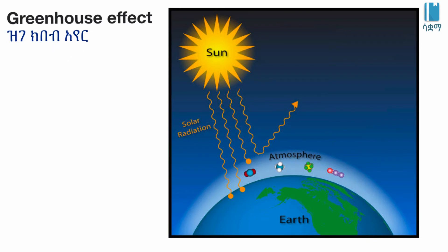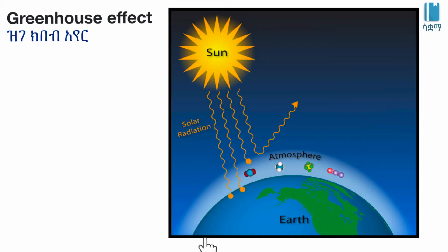The greenhouse effect is a natural process that warms the earth's surface. In addition to this gas, the surface is the earth's surface and is the soil because of the mass damage.